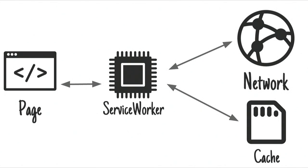Whenever your page requests any resource — be it an image, a script, or the HTML for the page itself — an event fires in the service worker that you get a chance to respond to. The service worker can then use the cache and fetch APIs to do something fancy, like serving up cached content.